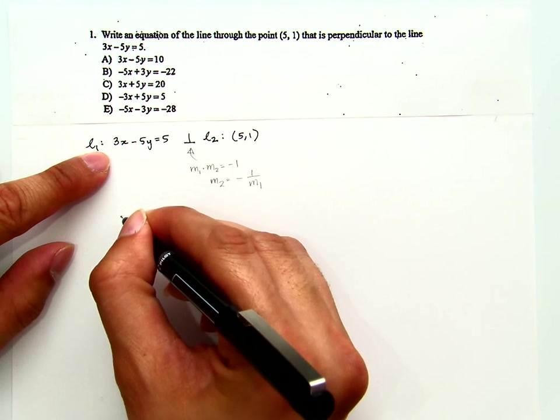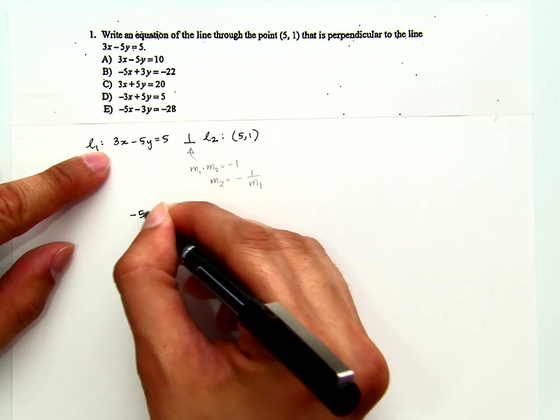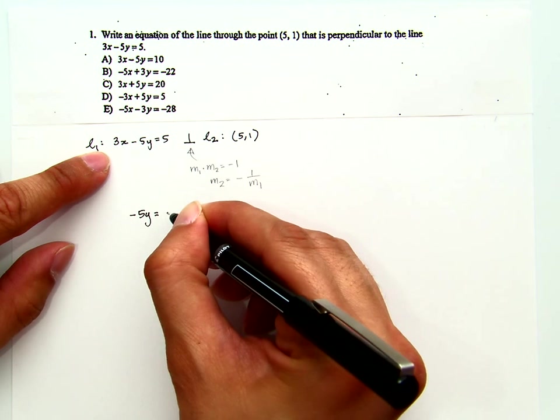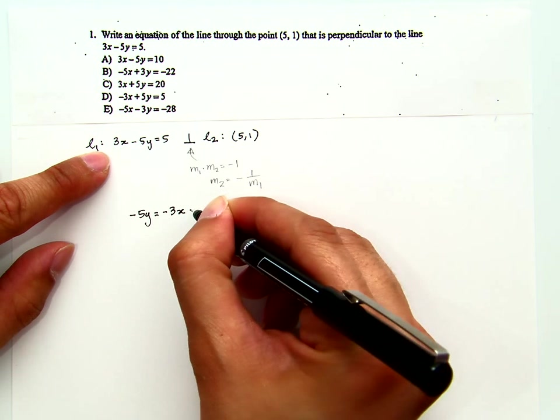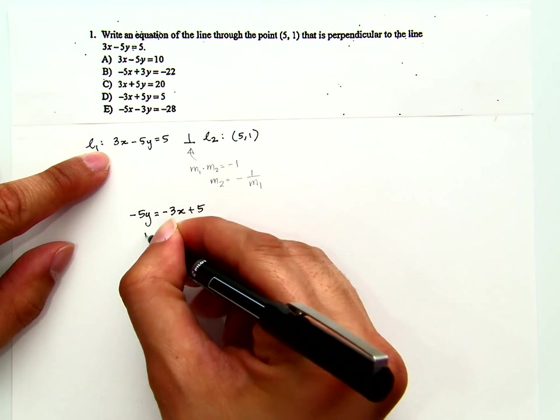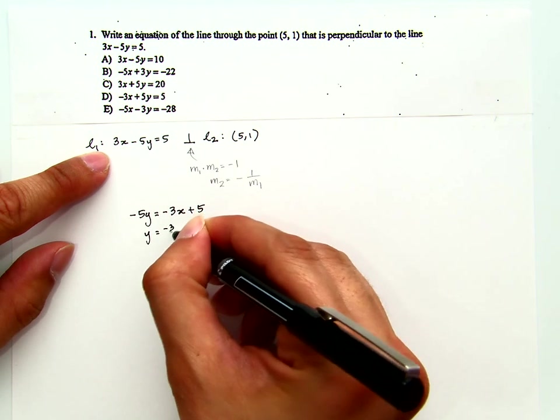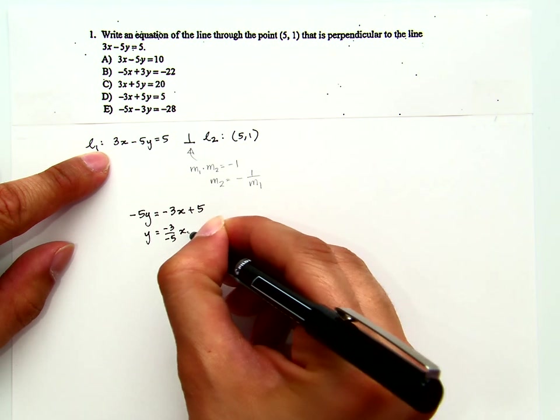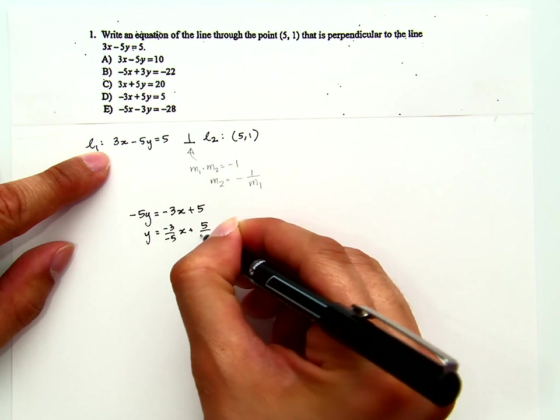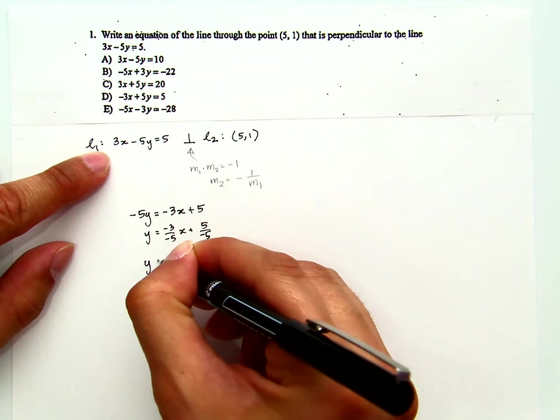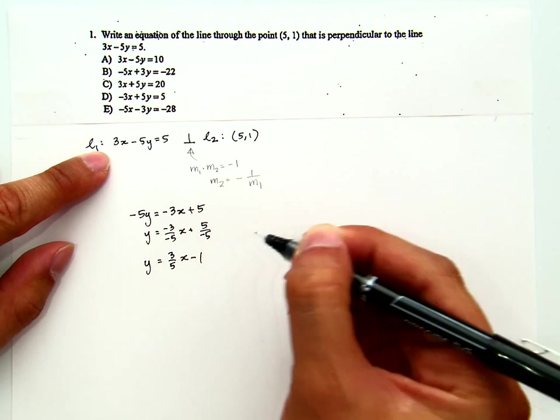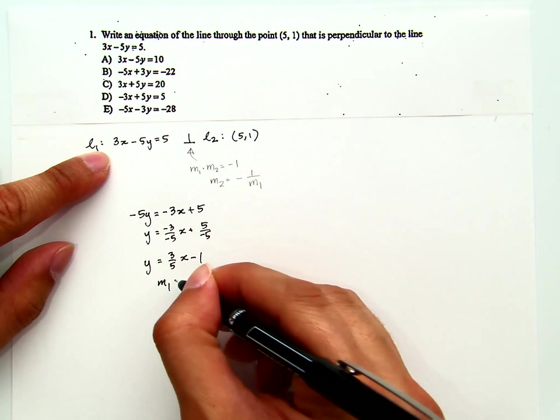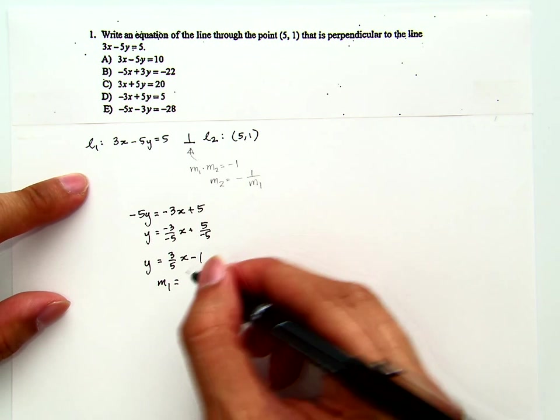I will find the slope for line 1. Let me solve it for y here so that we can read the slope from this line. Then divide by negative 5, that's negative 3 over negative 5x plus 5 over negative 5, y therefore equals 3 fifths x minus 1. So from here we see that the slope of line 1 is 3 fifths.